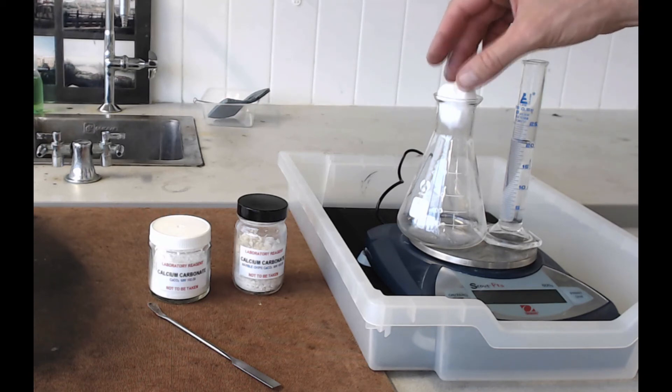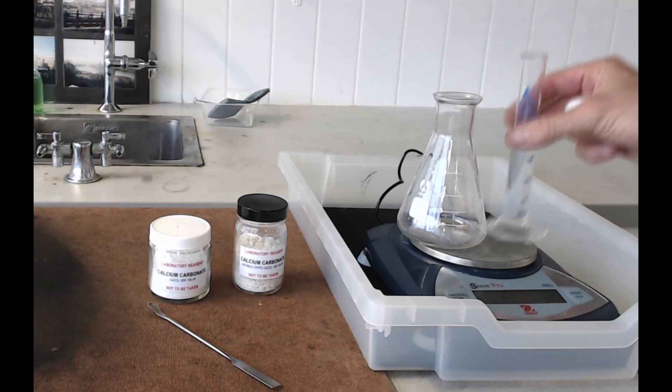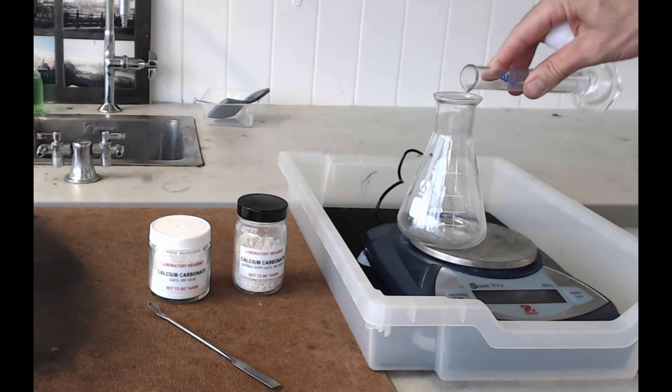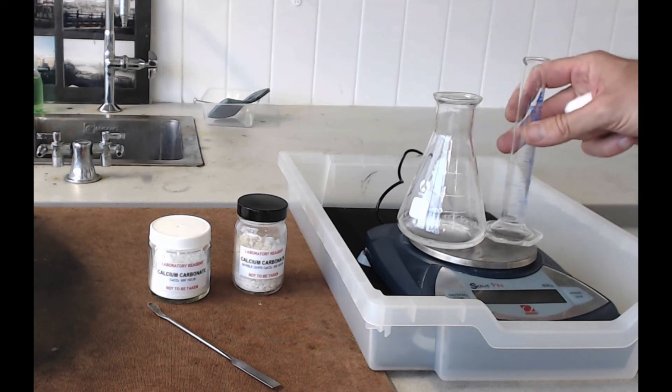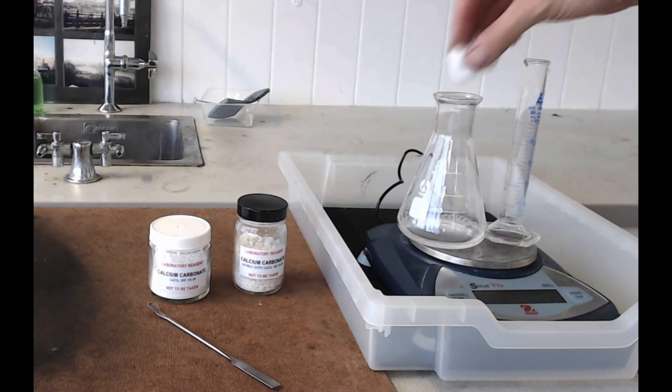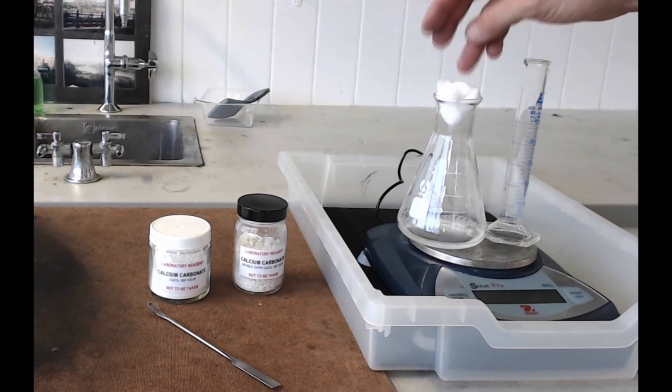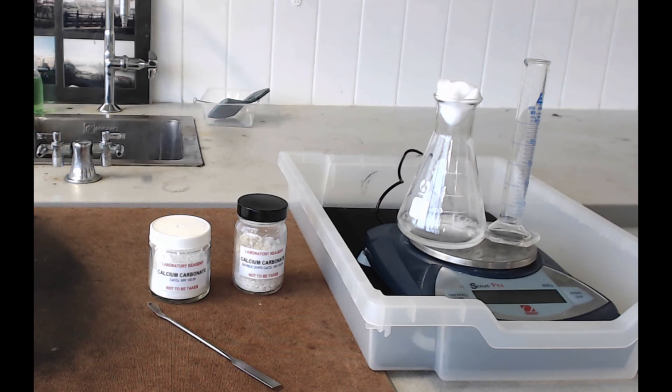Take your cotton bud out, pour your acid into the flask, and put the measuring cylinder back on the balance. That's very important because you're trying to see the mass loss of the whole system. Put the cotton wool bud in - its purpose is to stop any spray escaping from the flask while the reaction fizzes.